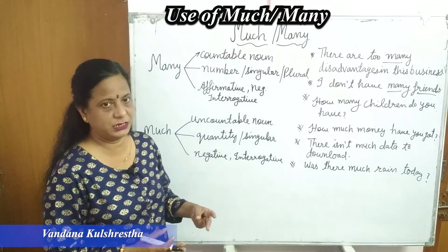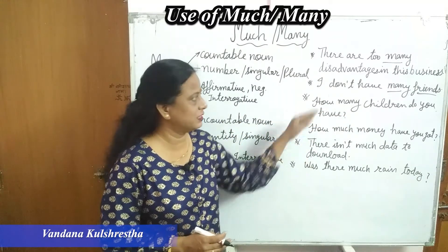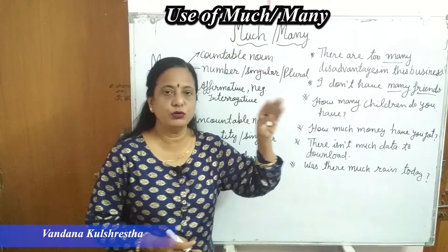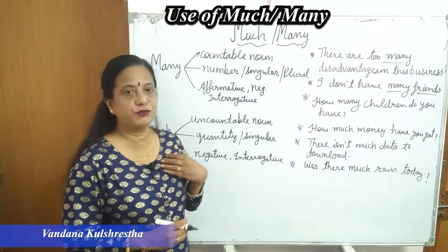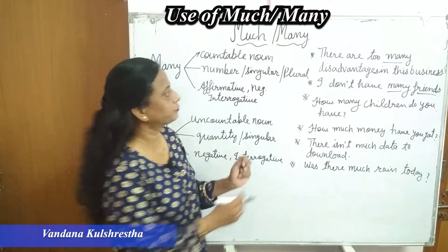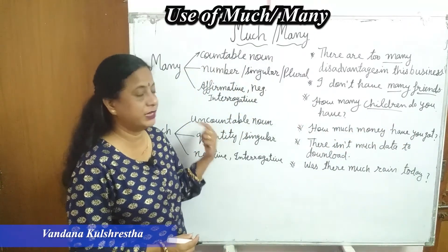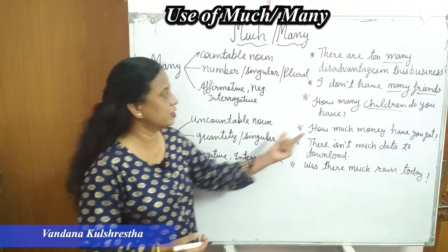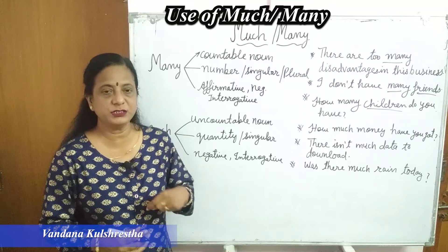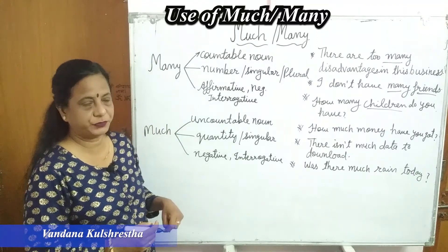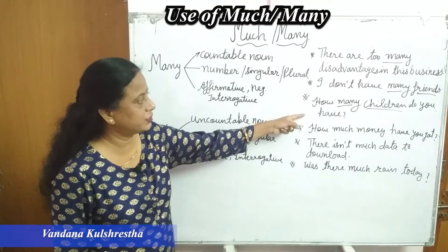Always remember: with much or many, we use a negative sentence to show small quantity. Jab hame kuch small quantity batani hoti hai — chahe much ho ya many ho — tab hum negative sentence ka use karte hain. And we always use contractions in negative sentences. We do not need to write the whole 'do not' — use 'don't', 'isn't', short form. 'How many children do you have?' — children is countable, and many is used when we do not know the exact quantity. This is an interrogative sentence.